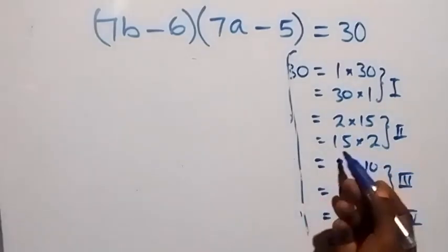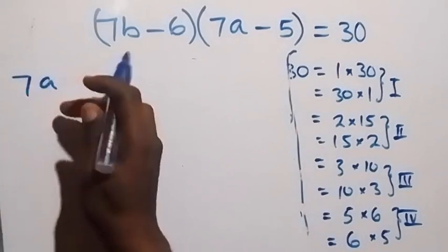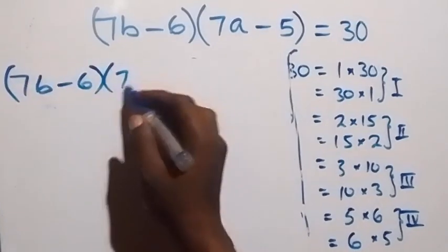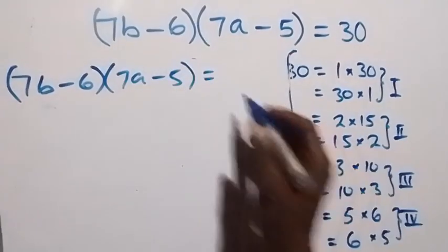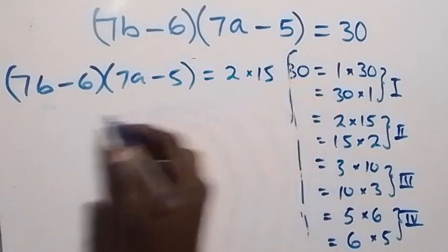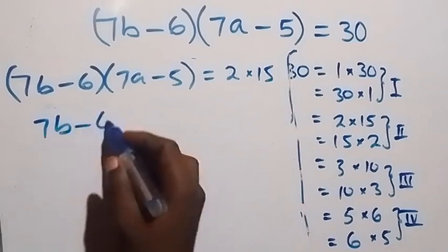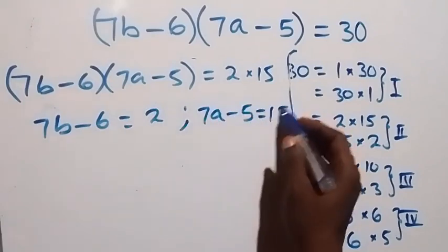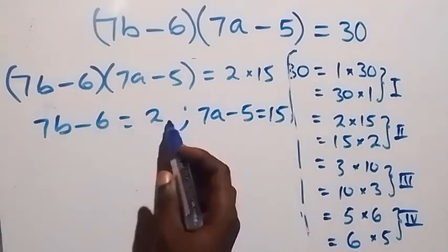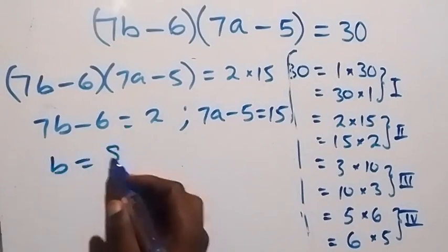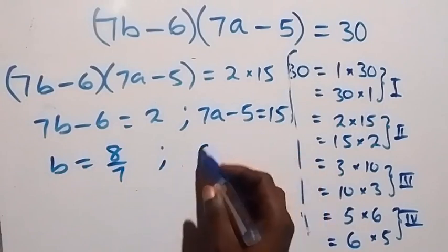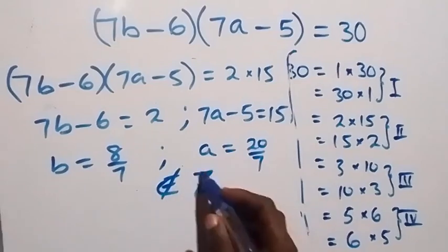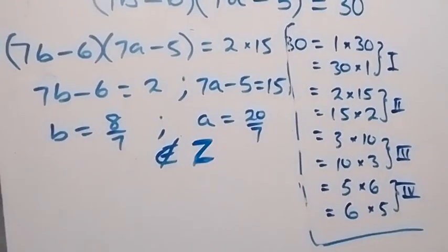For Case 2, with 2 times 15: (7b minus 6) times (7a minus 5) equals 2 times 15. We equate 7b minus 6 equals 2 and 7a minus 5 equals 15. Solving gives b equals 8 over 7 and a equals 20 over 7 — both are not members of the integer solution.